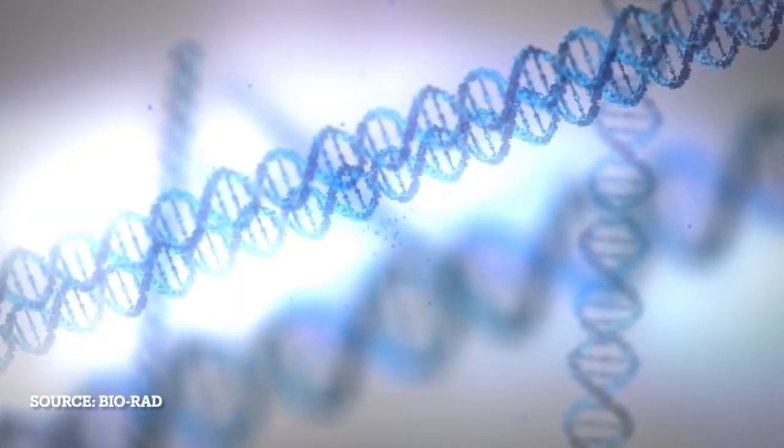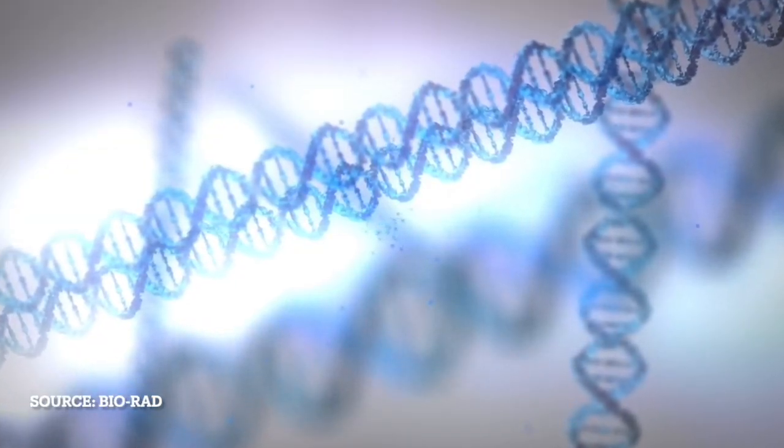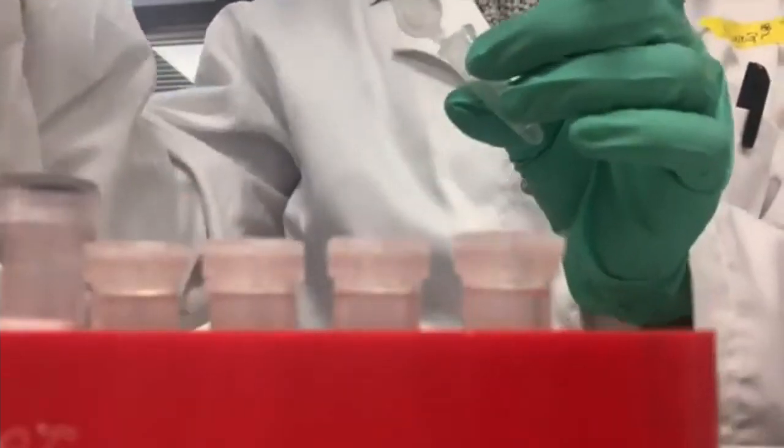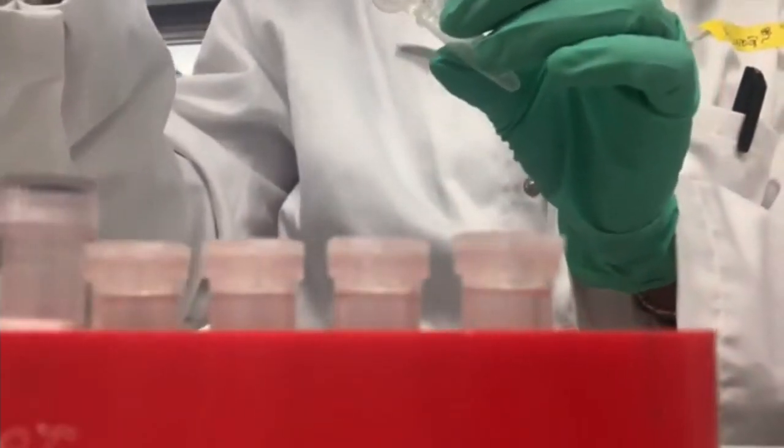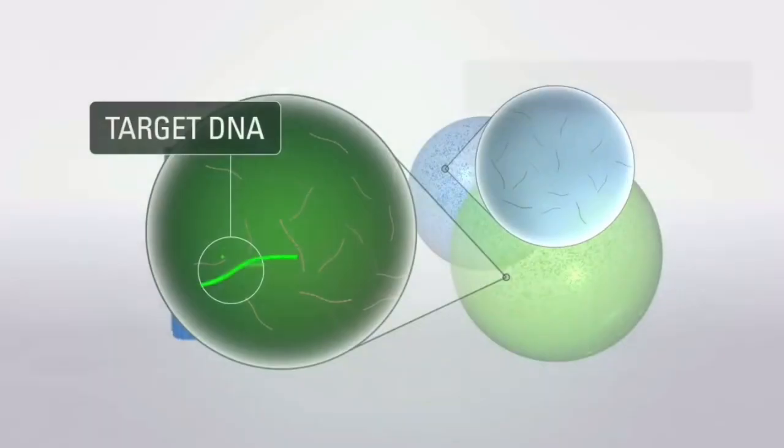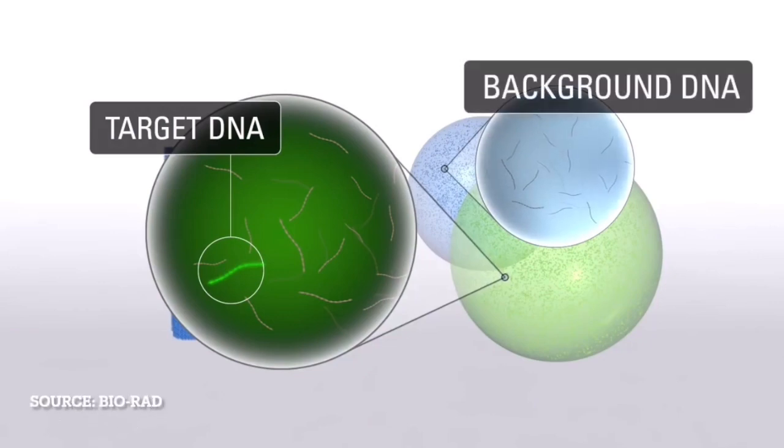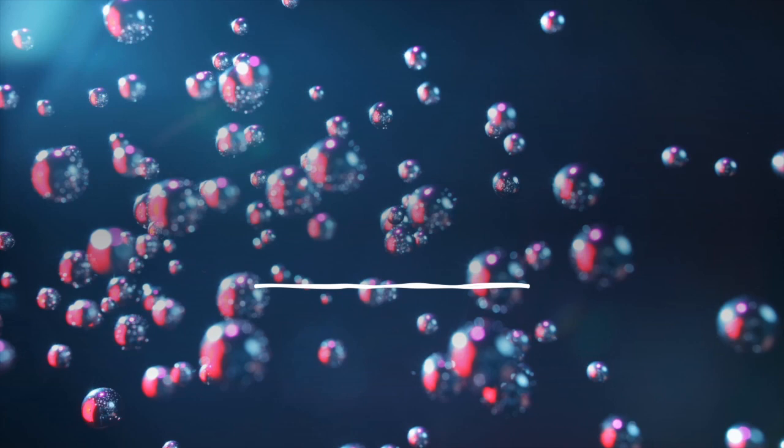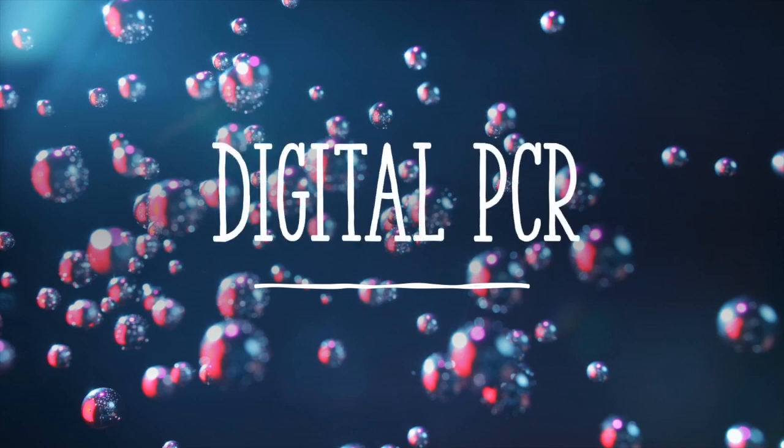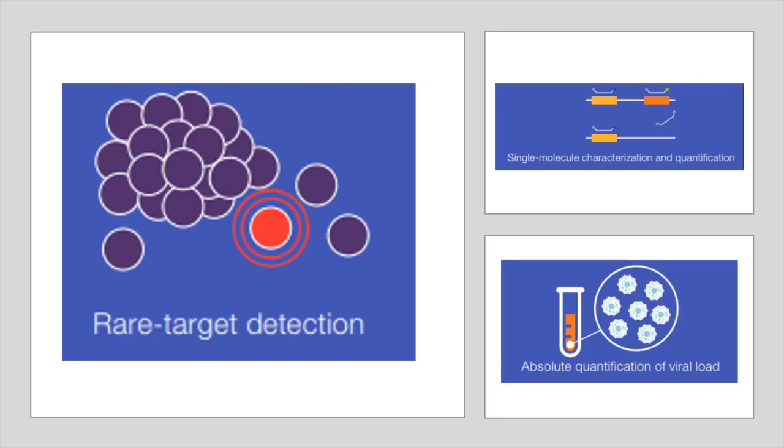Researchers performing sensitive applications such as copy number variation and rare target detection often find themselves struggling to identify faint genetic signals against a strong background, especially when it is a single positive lost in a dense pool of negatives. Finding the rare allele or mutant sequence is a typical needle in a haystack problem.